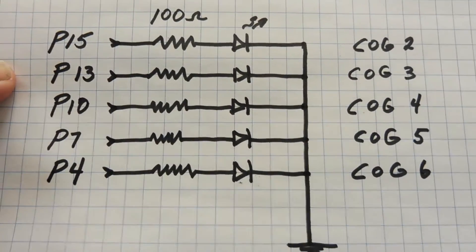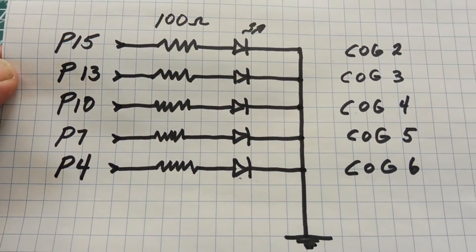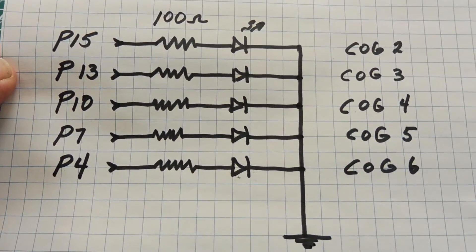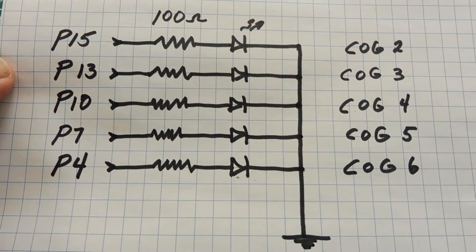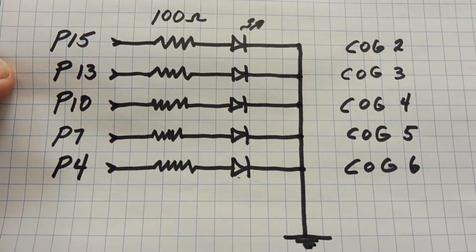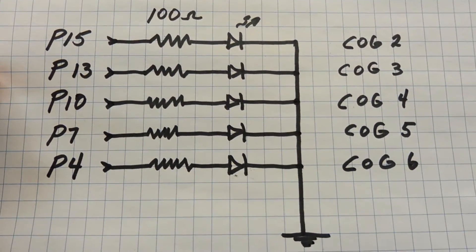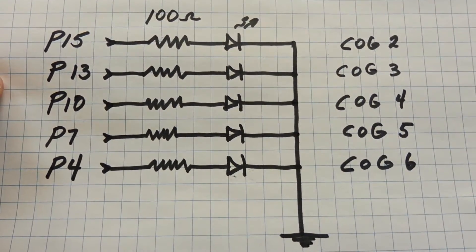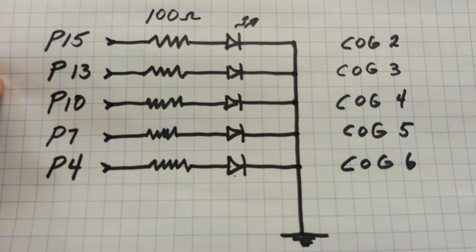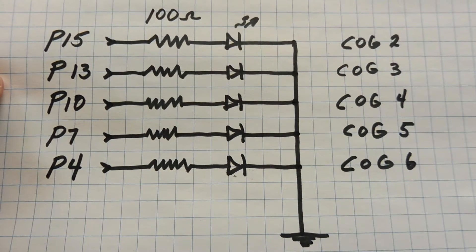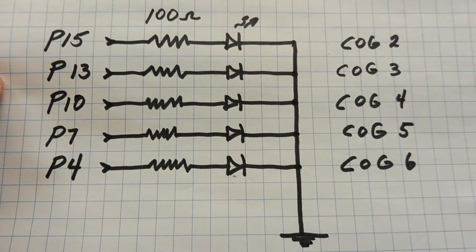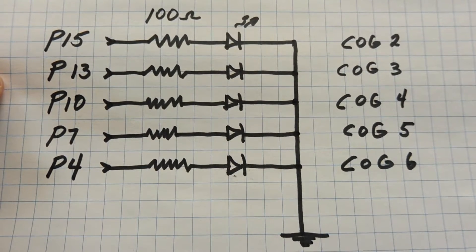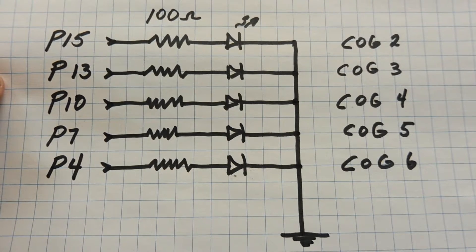Here's the schematic for the 5 LEDs on the proto breadboard. On the very left you can see the GPIO pin numbers. I'm using pin 15, pin 13, pin 10, pin 7, and pin 4 — those 5 GPIO pins are controlling the 5 LEDs.